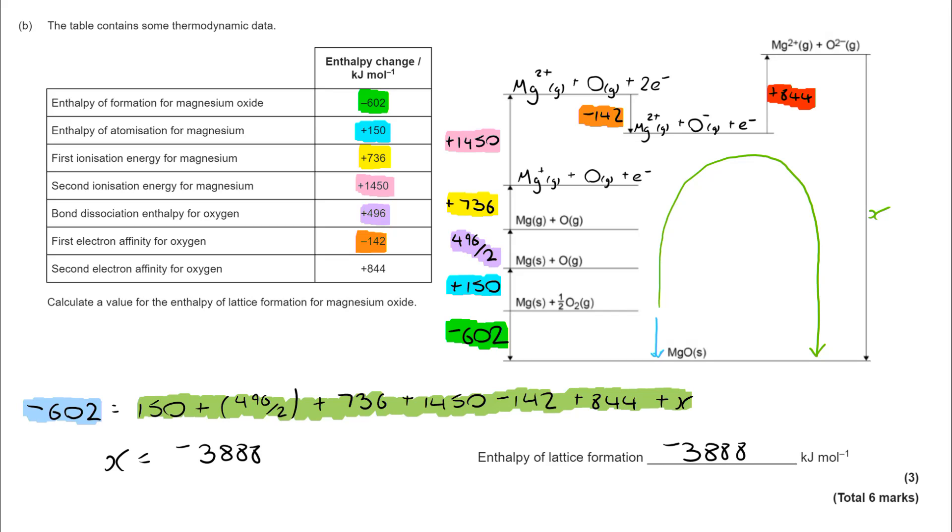Now bear in mind, if you cut corners on this, it can be easy to get to the right magnitude, but come out as plus 3888. It's worth taking the time to work through the full cycle because that would take you down from a three mark to just one mark on this question.